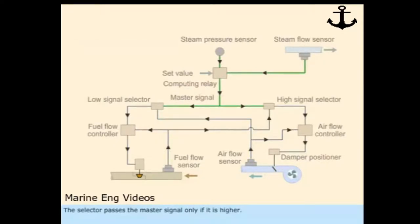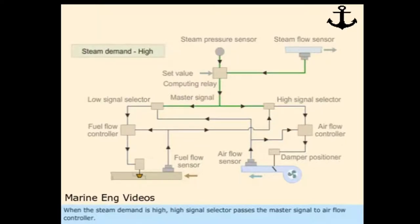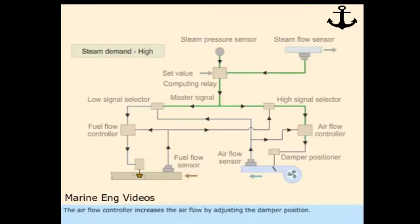When the steam demand is high, the high signal selector passes the master signal to the air flow controller. In the high signal selector, the master signal is compared with the signal representing the fuel flow. The air flow controller increases the air flow by adjusting the damper position.